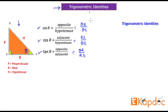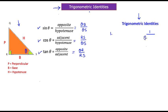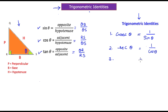On the right hand side of the screen I'm going to write down all the trigonometric identities important to us. The first standard identity: the inverse of sine theta equals cosec theta. The second: the inverse of cos theta equals sec theta. The third: the inverse of tangent theta equals cot theta.